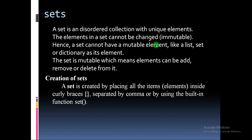The elements in the set cannot be changed — that is, they are immutable. Immutable means the elements cannot be changed. However, the set itself is mutable. Observe the difference: the elements are immutable but the set is mutable. For example, if I create a set with values 1, 2, 3, 4, I am not changing those values, but I can add or remove values from the set. Once a value is assigned to the set, that value cannot be modified.